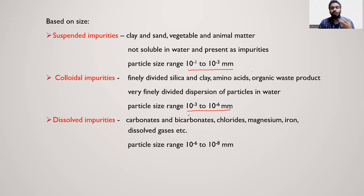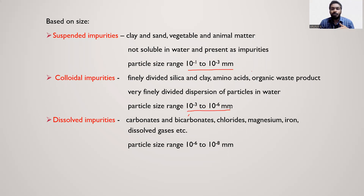Dissolved impurities: when salt is dissolved in a glass of water, it is fully dissolved. Examples of dissolved impurities include carbonates, bicarbonates, chlorides, magnesium, iron, and dissolved gases. Dissolved gases are impurities — such as oxygen and hydrogen sulfide.